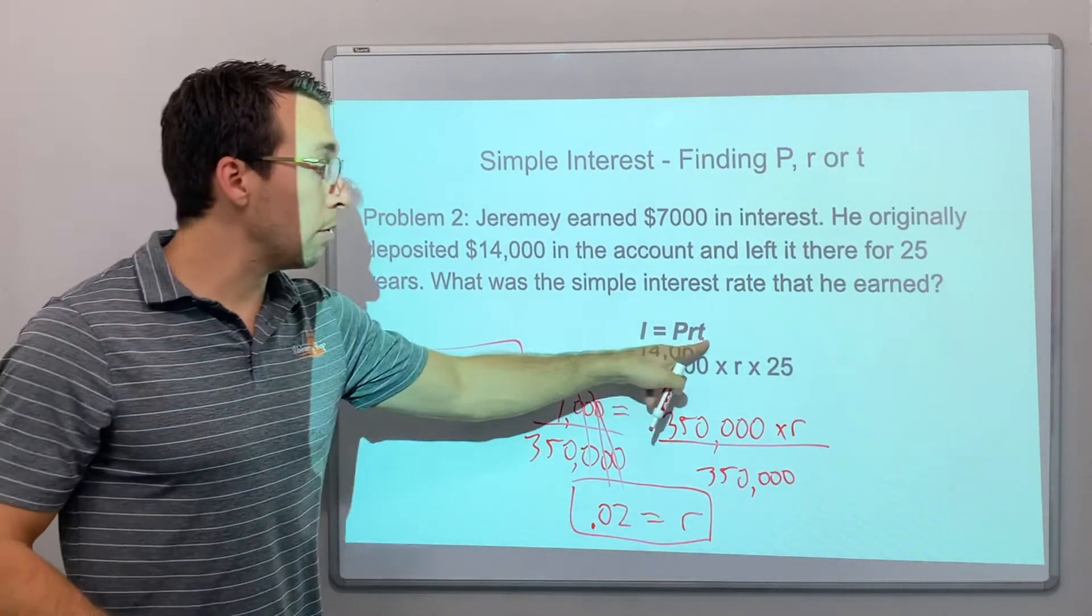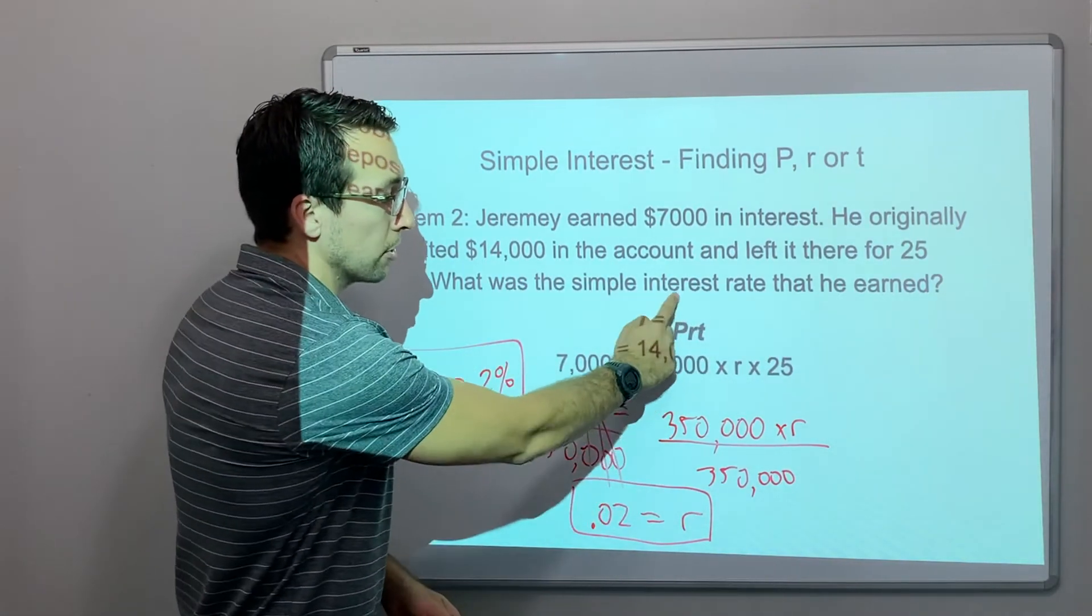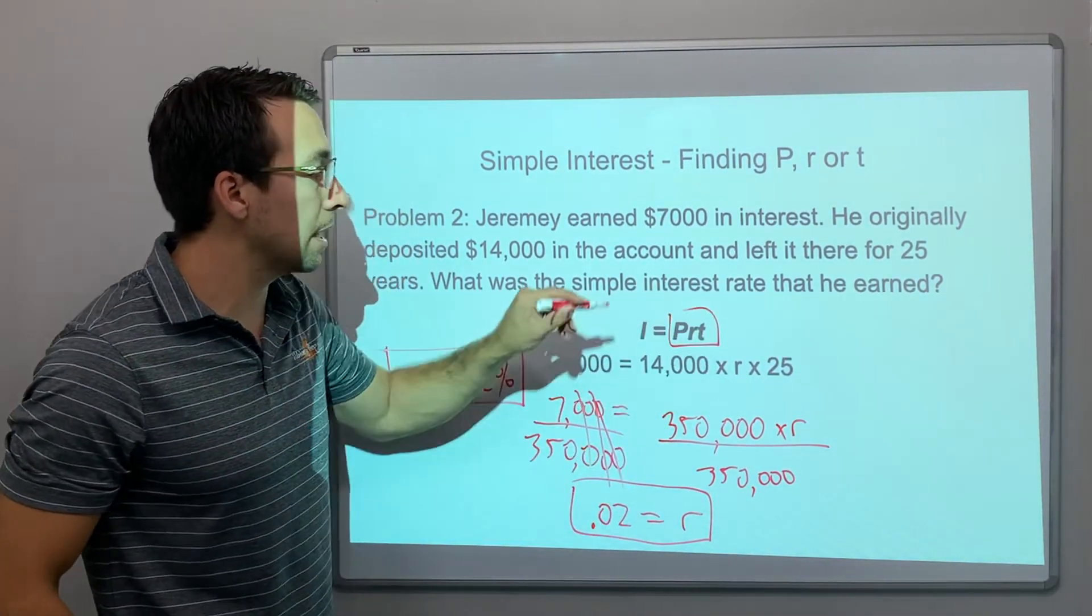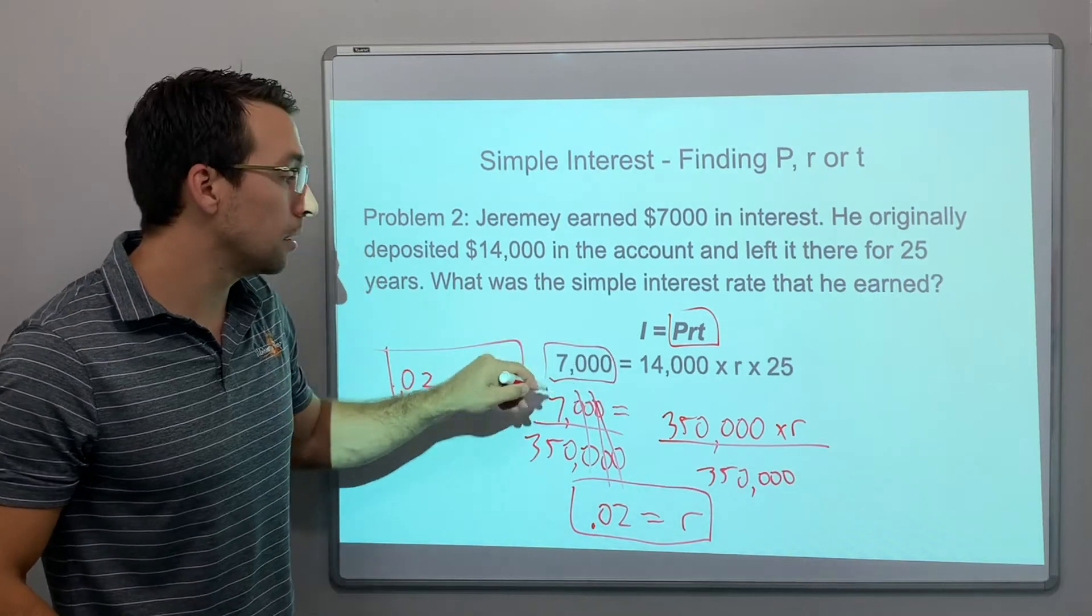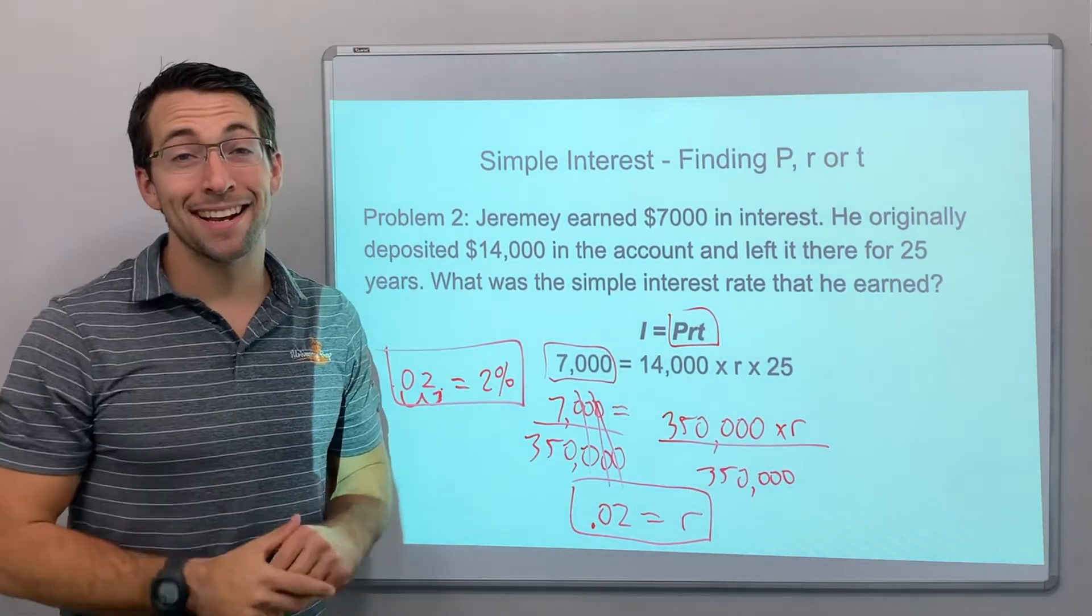There you go. If you can remember this formula, you know that it's just multiply, multiply, multiply. You just have to multiply these three variables together, and that equals your interest. That's it. Good luck. See you next time.